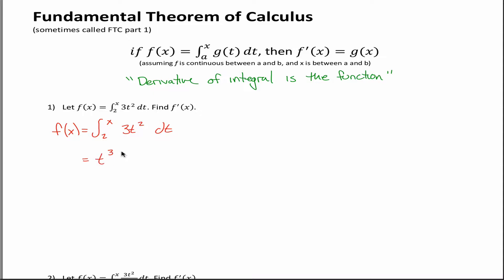But then I wouldn't be done. I'd have to evaluate that antiderivative from 2 to x. You can evaluate it from like 2 to 4 or something. The same methods work: you take the number on top and change all of your variable into that number, so x's in this case. Then you subtract what you get if you change all the t's into 2's. So I'd have 2 cubed, which is 8. So f of x is equal to x cubed minus 8.